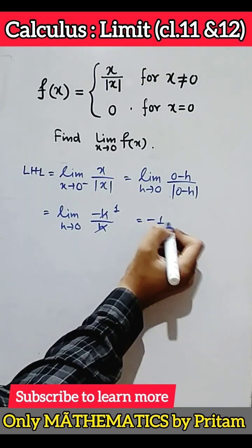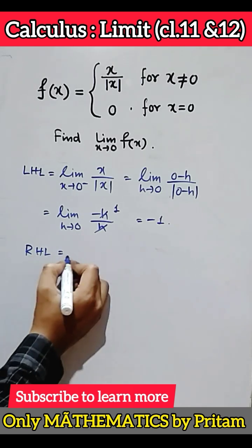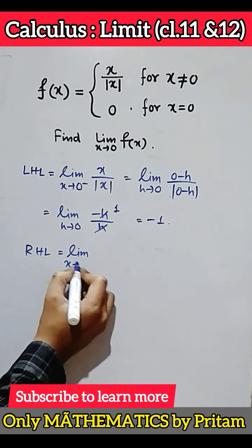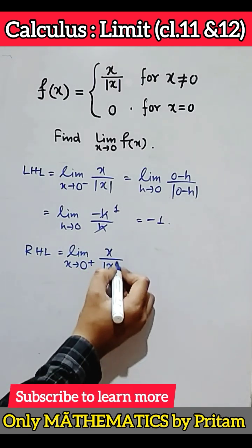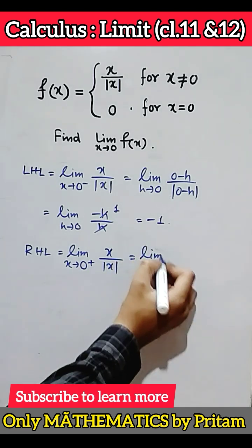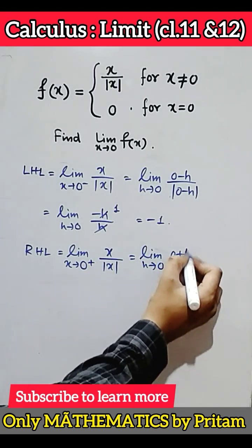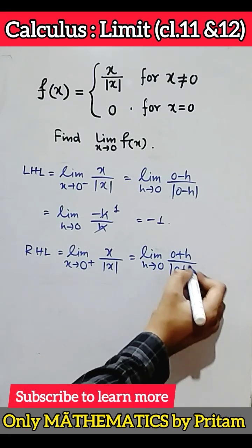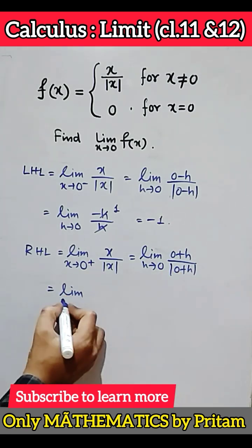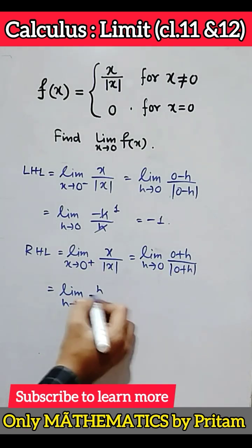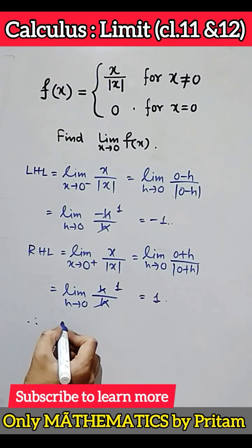So the left-hand limit answer is minus 1. Next, the right-hand limit: limit x tends to 0 plus of x by mod x. Substituting x = 0 plus h, limit h tends to 0 of h divided by mod of h, which equals h over h. So the right-hand limit answer is 1.